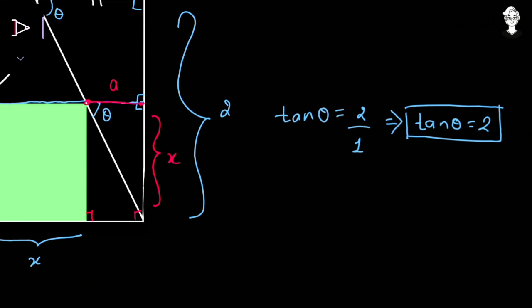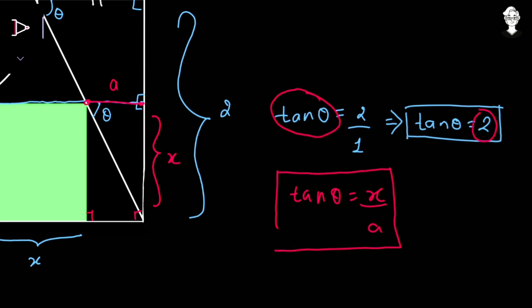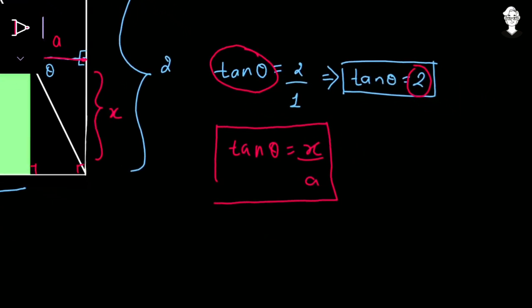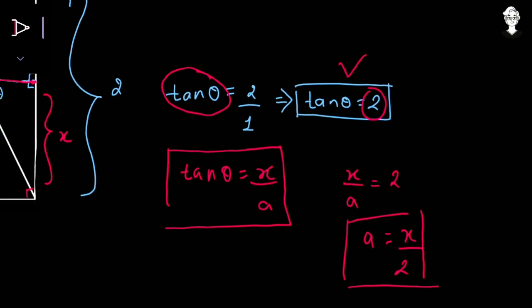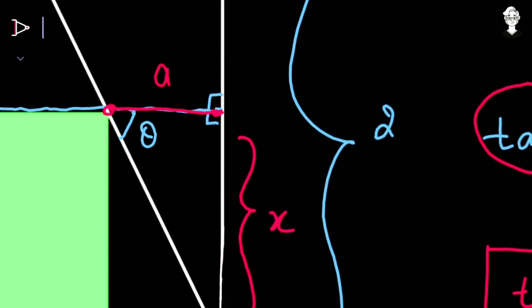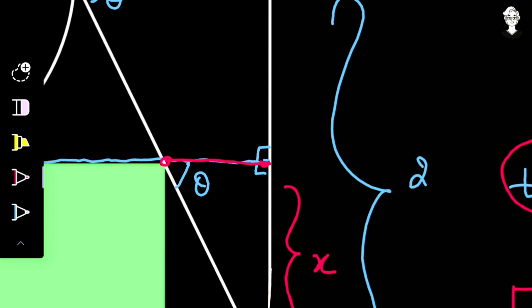We have that side equals x and base equals A. In this smaller right-angle triangle, the value of tan theta is opposite over base, that is x upon A. We already have tan theta equals 2, and now we also have tan theta equals x upon A. Equating both, x upon A equals 2, so A equals x upon 2.